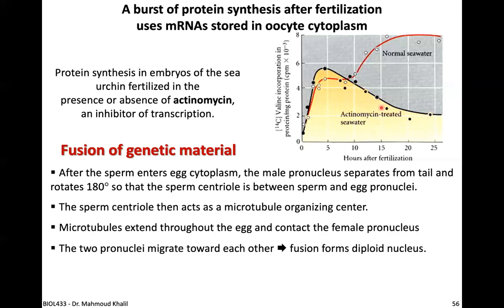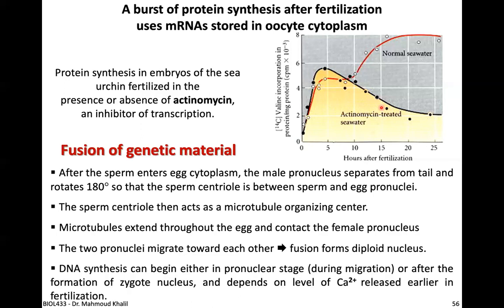The two pronuclei migrate toward each other and fuse to form a diploid nucleus. DNA synthesis can begin either during the pronuclear migration stage or after formation of the diploid zygote nucleus. This depends on an important ion — the calcium ion — which is released in the cytoplasm upon fertilization.